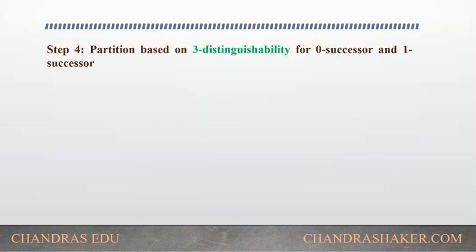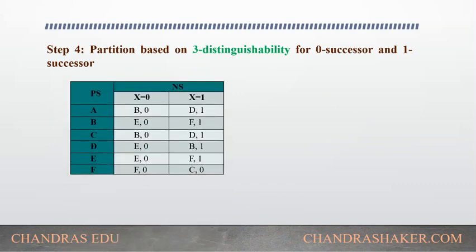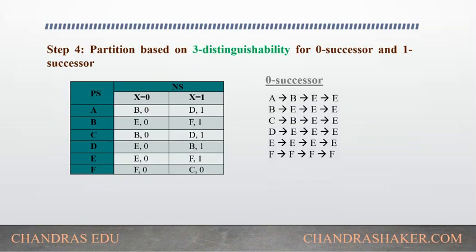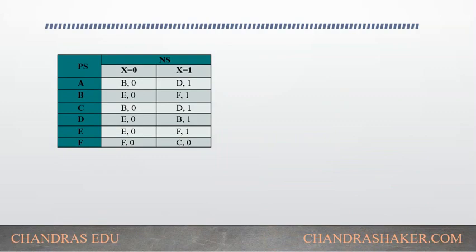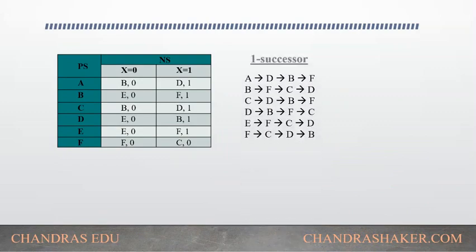Next we check the partition based on 3-distinguishability for the 0-successor and 1-successor. For the 0-successor, we see a pointing to b, b pointing to e, and e pointing to e. We find the same set of next states as in the 2-distinguishability 0-successor, so no further partition is possible there. For the 1-successor of 3-distinguishability, a points to d, d points to b, and b points to f. The earlier partitions were {a, c}, {d}, {b, e}, and {f}.